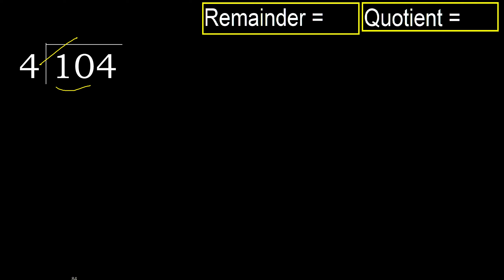4 multiplied by 3 is 12 — 12 is greater. 4 multiplied by 2 is 8. 8 is not greater; 10 minus 8 is 2. Next.